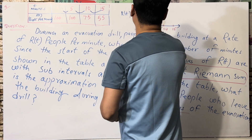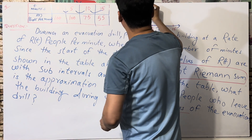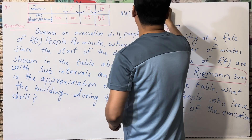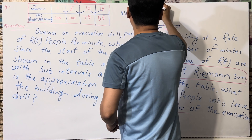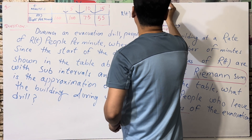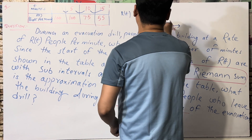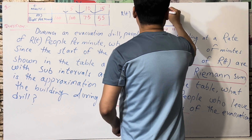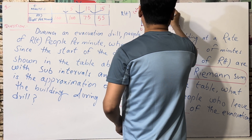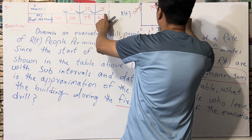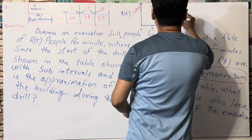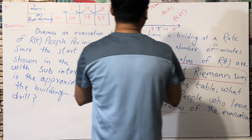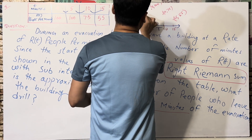So plotting these points: the first point is at (0, 100), the second point is at (5, 100), the third point is at (10, 75) - so that point is a little lower - and the last point is at (15, 55). These four points define the curve we are working with.